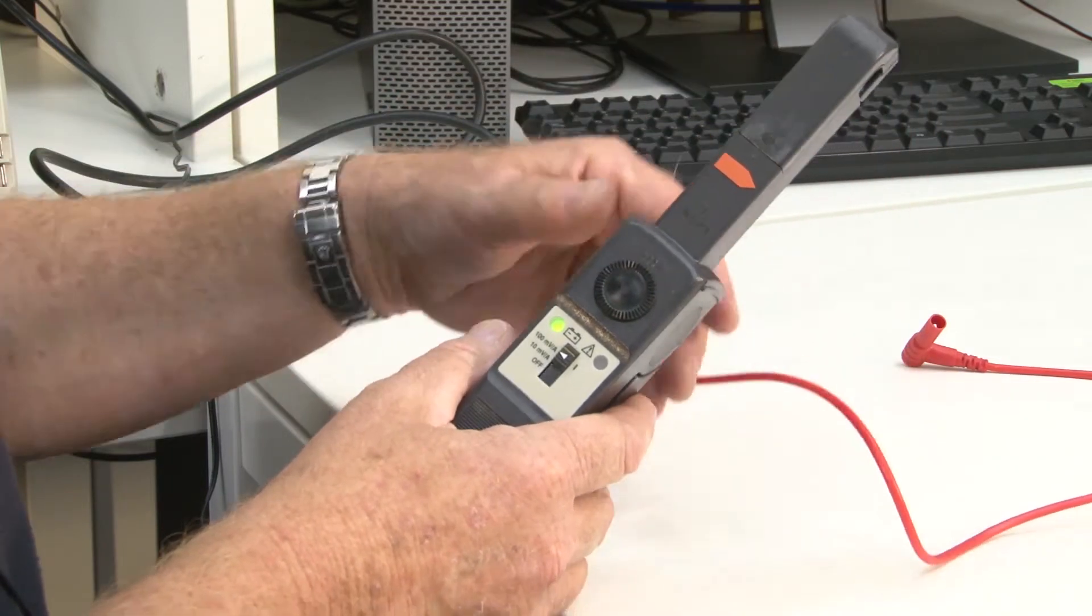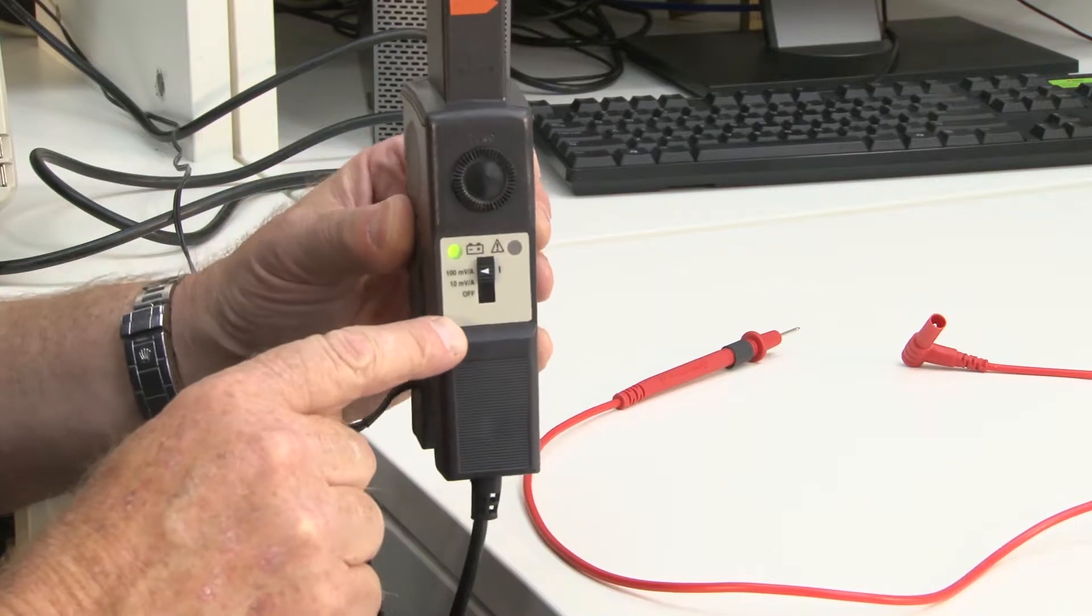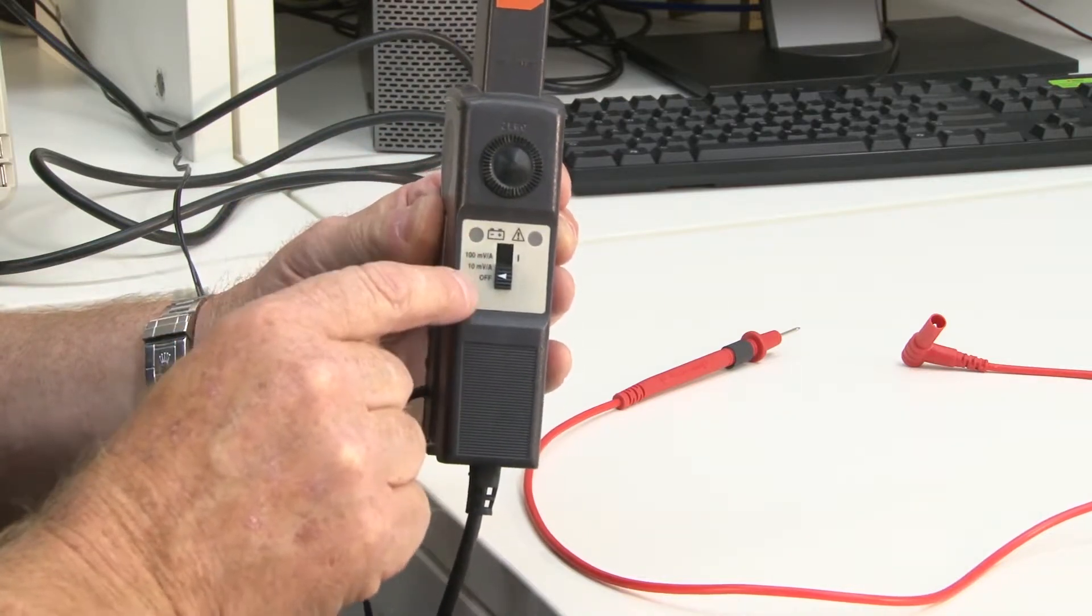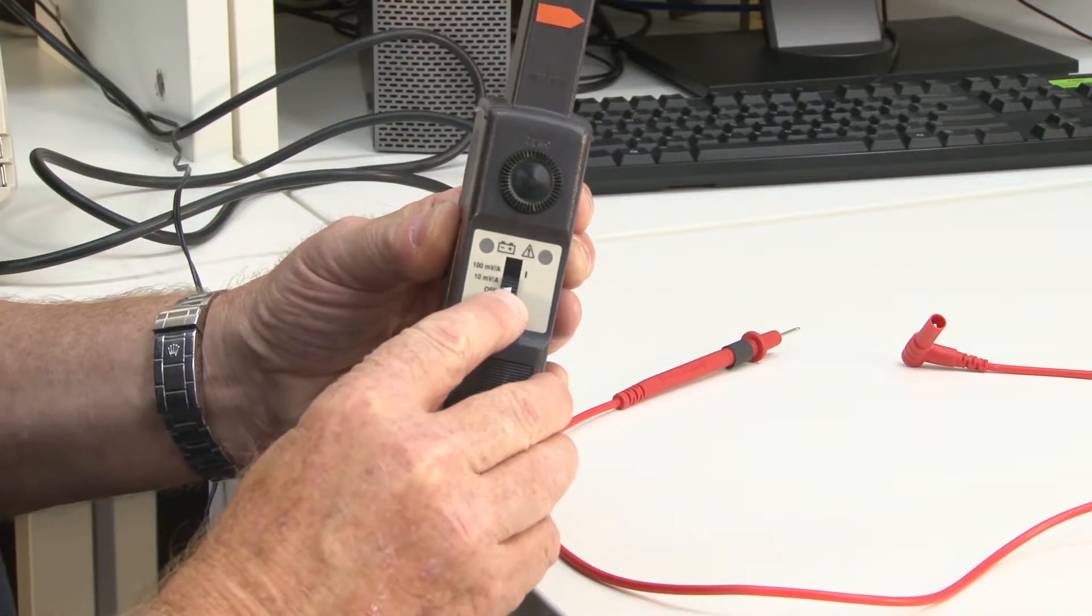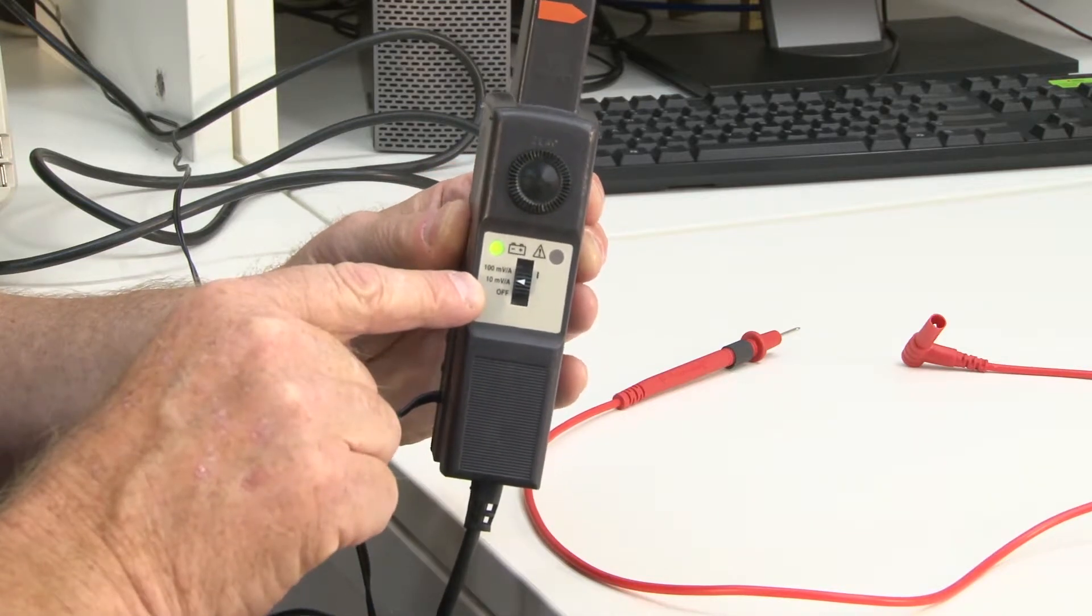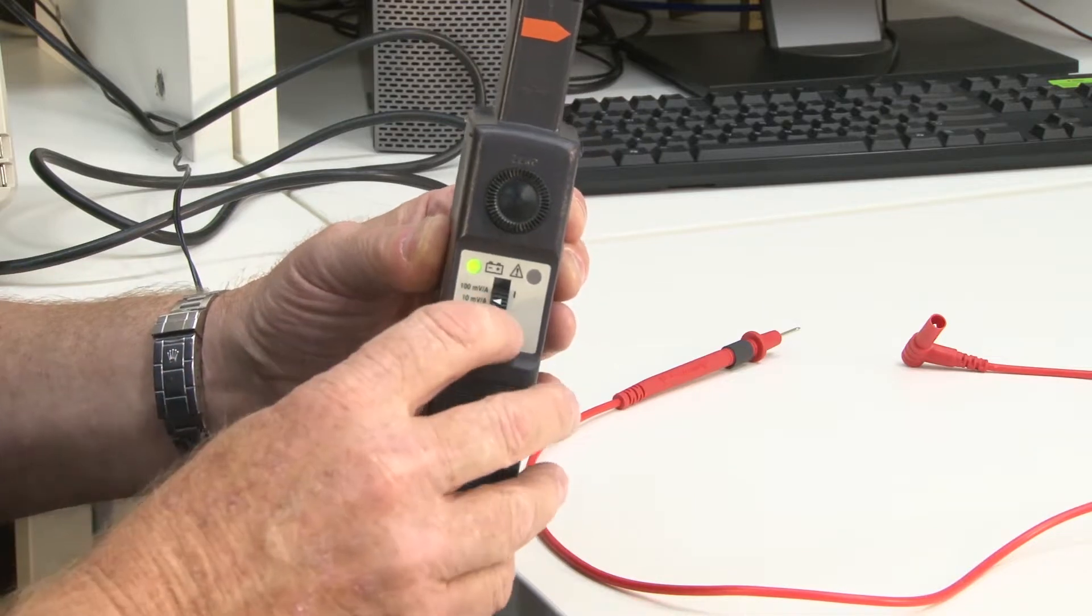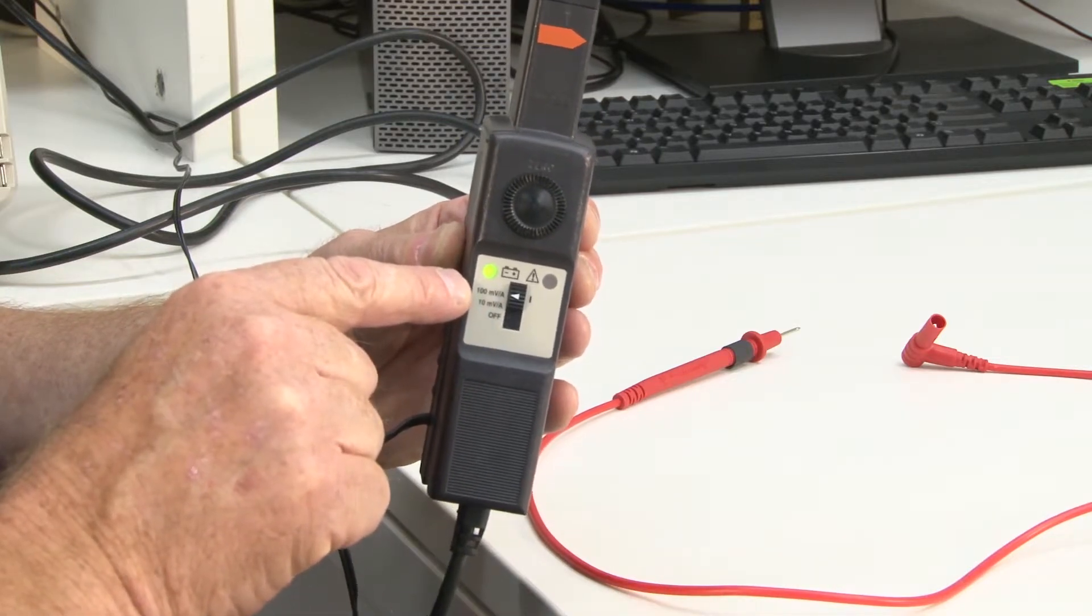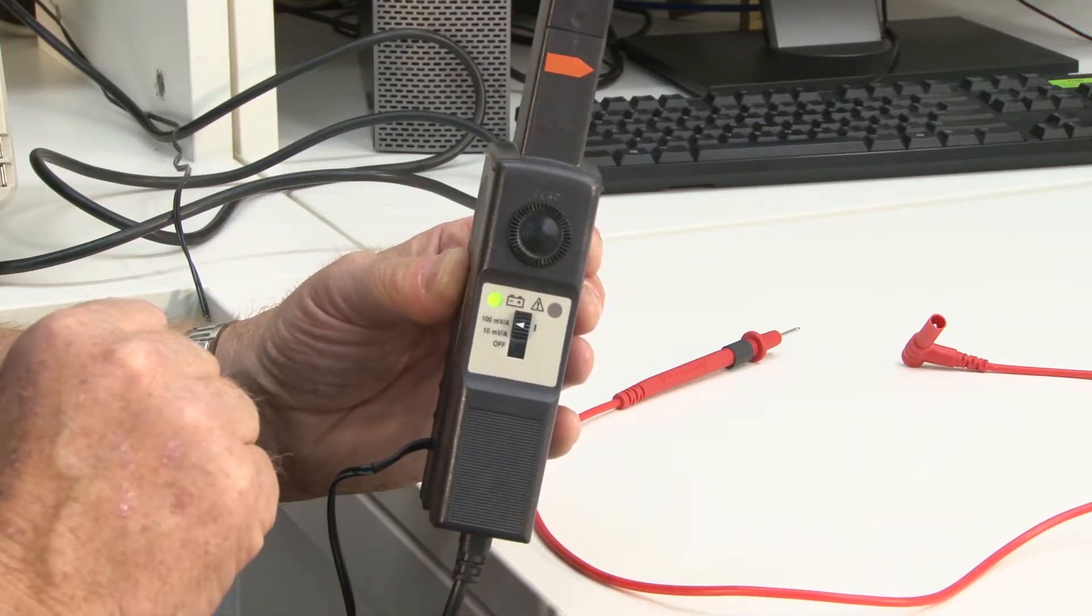Now have a look over here. What we have is a little switch here, and there are three positions. The lower one here is the off position. If we move it up to the first position here, that indicates that we're set to 10 millivolts per amp. Moving up to the top position, that indicates that we are at 100 millivolts per amp. And in a moment we need to explain really what that means.